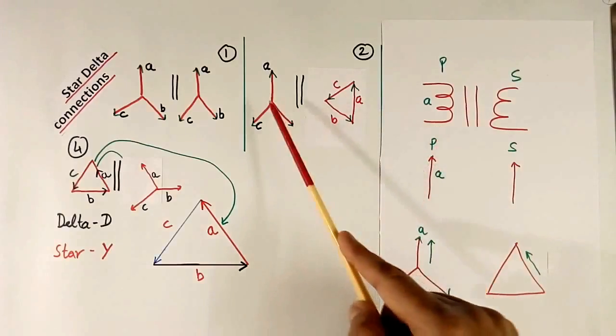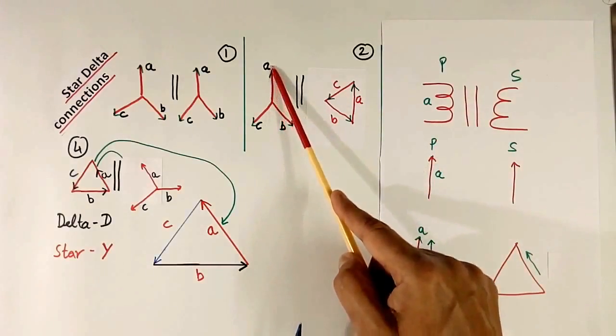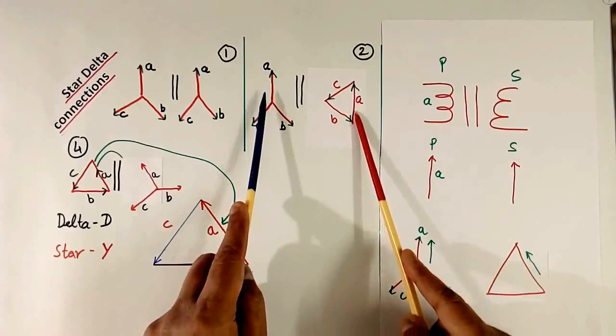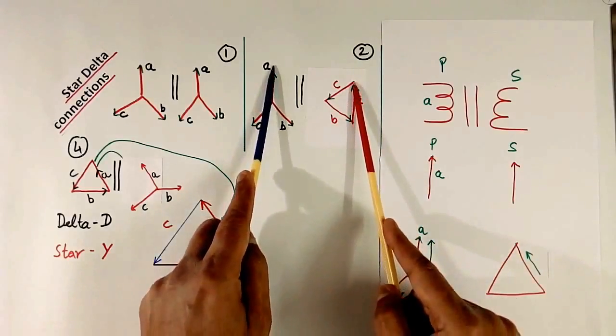So this voltage, primary winding, A winding voltage is this. Then secondary winding voltage will be also like this.